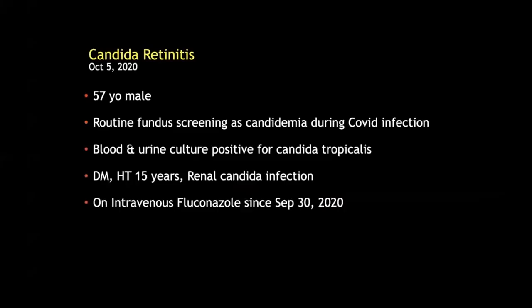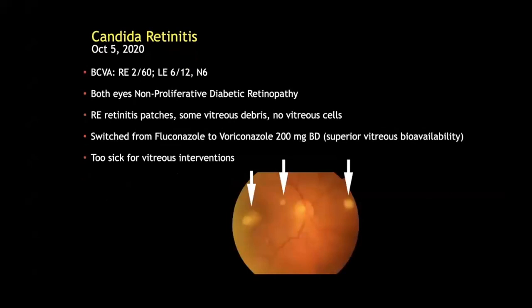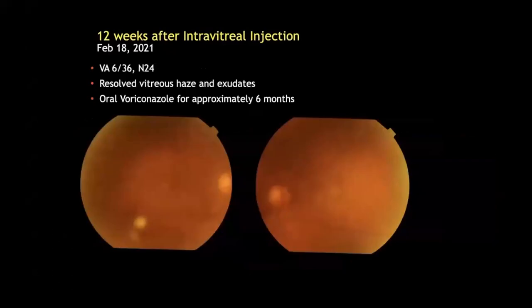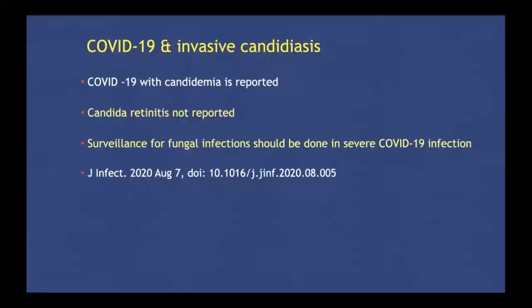In October last year we had a 57-year-old male who came for routine fundus screening as he had developed candidemia during his COVID infection. He was on intravenous fluconazole at this time. In the right eye we switched him from fluconazole to voriconazole because of its superior bioavailability. There was initial improvement with subsequent worsening, so he was treated with intravitreal antimicrobial agents with rapid resolution and complete clearing of all lesions at 12 weeks. Invasive candidiasis and candidemia has been reported with COVID-19 infection, but candida retinitis has not yet been reported.